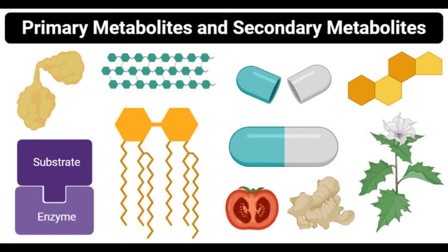Secondary metabolites are also not a part of the molecular organization of the organism. Some categories of secondary metabolites have been used in various biotechnological procedures for the formation of drugs and other compounds. Since secondary metabolites are species-specific, different secondary metabolites are involved in various procedures. Some examples include steroids, essential oils, phenolics, alkaloids, pigments, antibiotics, etc.